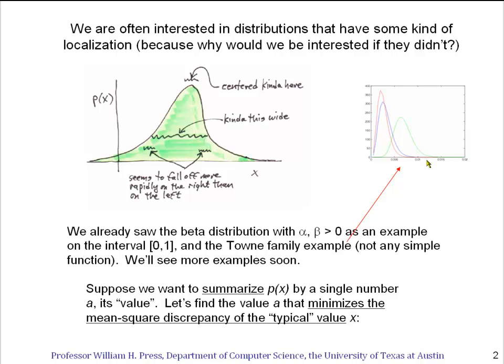Suppose we want to summarize p(x) by a single number a, and call it its value. In fact, we're going to call it its mean value in this first example. So let's find a value a, a number, that would be somewhere along this x-axis, that minimizes the mean square discrepancy of the typical value of x.